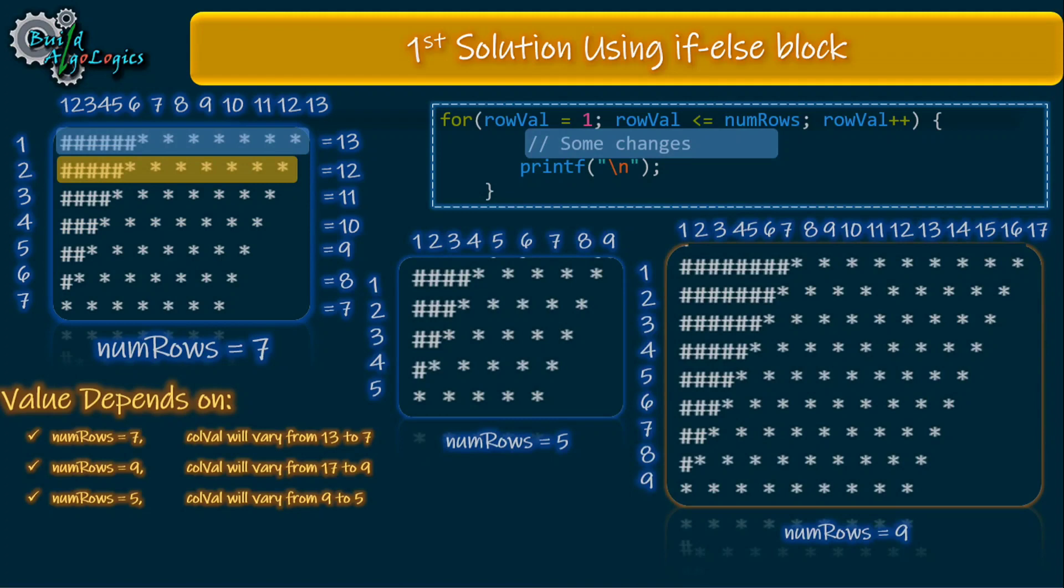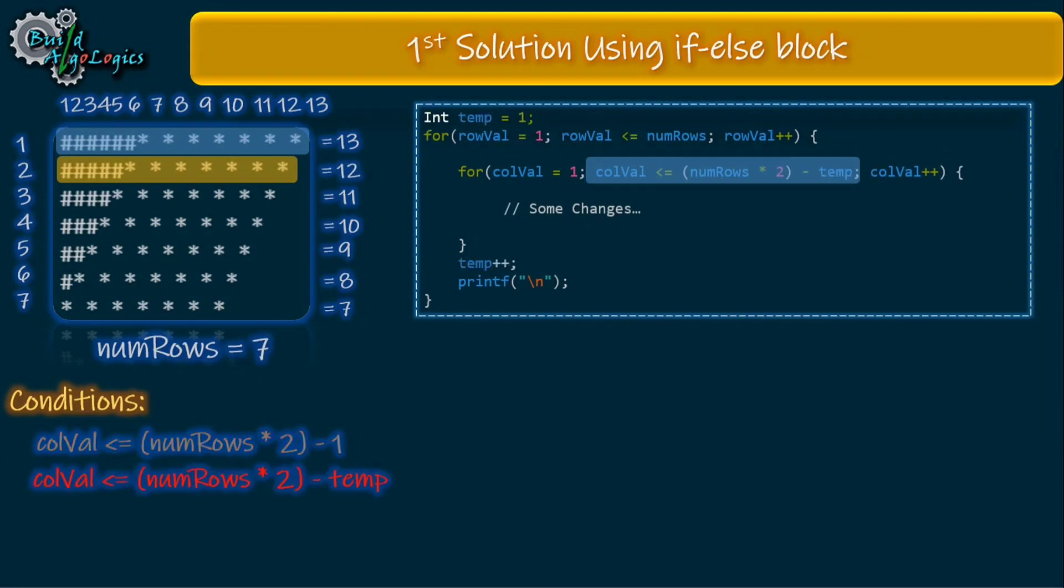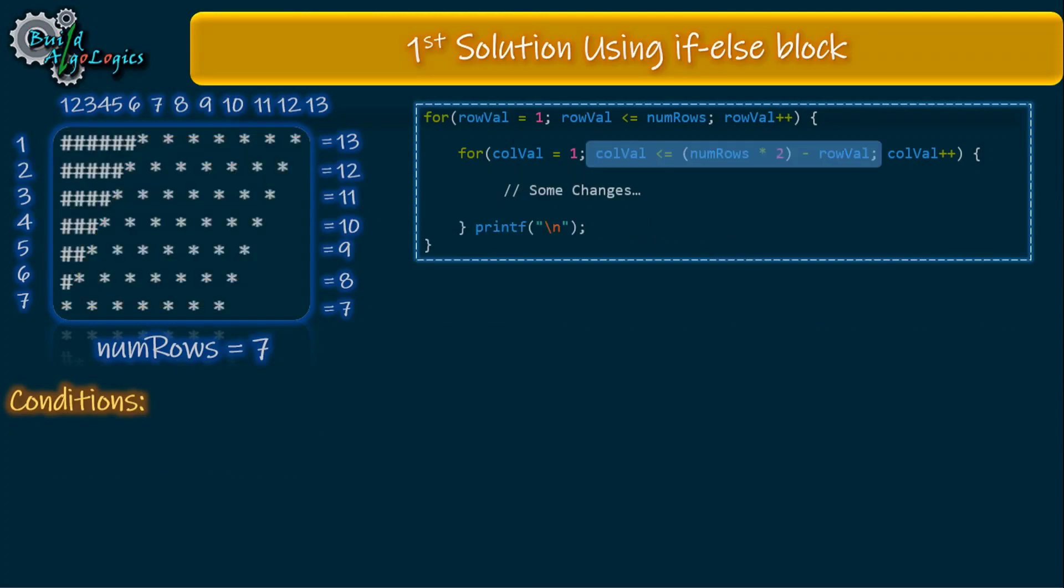By looking at these values of columns, we can clearly see that the values of the first rows are nothing but doubling the value of numRows minus 1. But we can't use this condition as is here because if we use this condition we get the same values for each row. Here it is 13, but we want this value to be decremented each time by one. For this purpose we could use some temp variable and increment its values after printing each row. But instead of using extra temp variable, we can use our row value here because this value is also varying from 1 to 7.